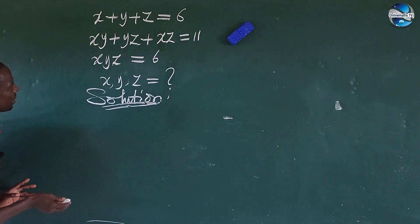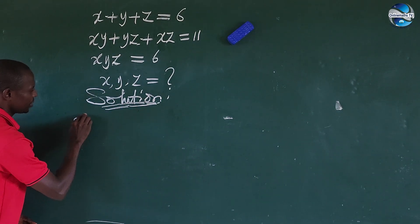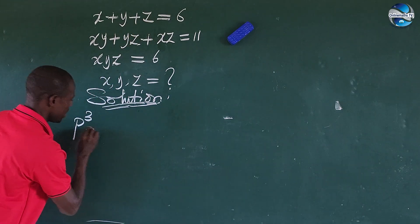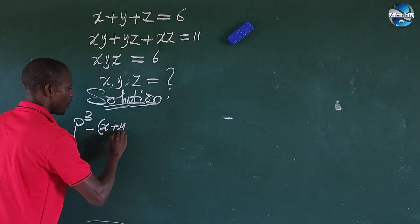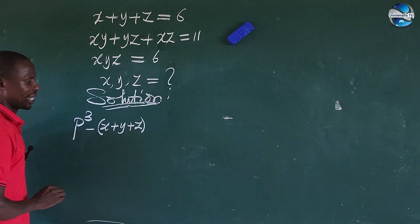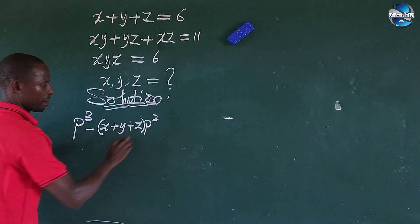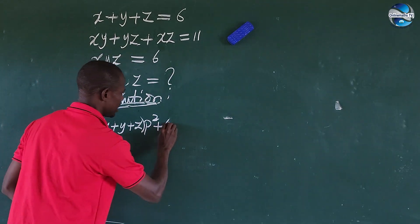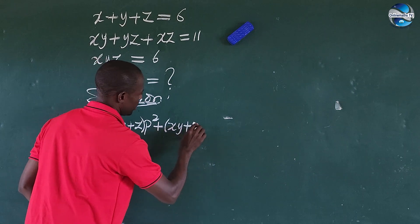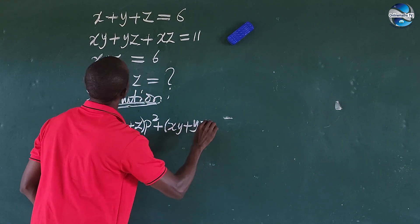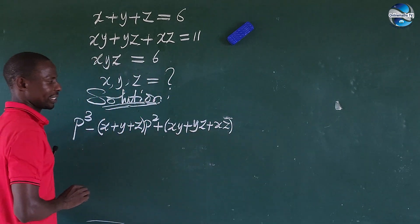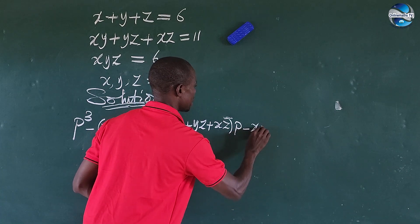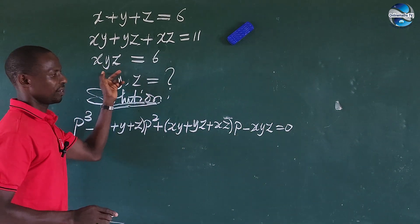Look at the trick here. We form it in P. We're going to have P to the power of 3, minus bracket x plus y plus z, into P to the power of 2, then plus bracket xy plus yz plus xz, into P, then minus xyz, equal to 0.